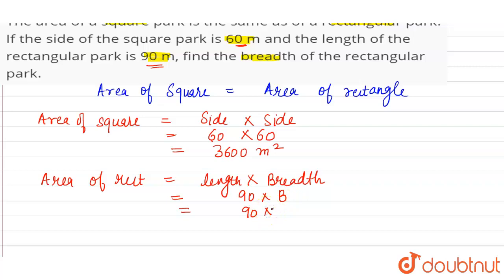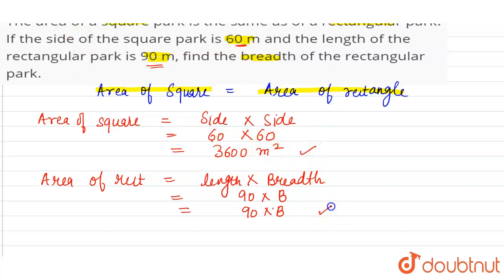It is given to us that area of square is equal to area of rectangle. So we can equate 3600 with 90b.